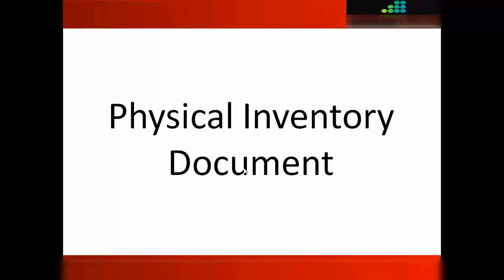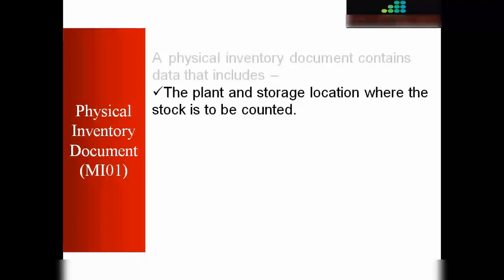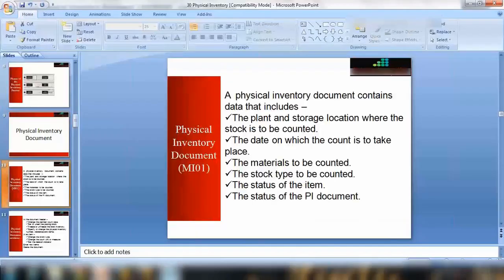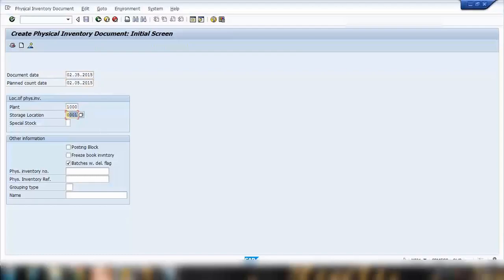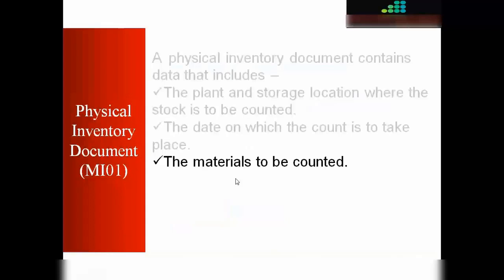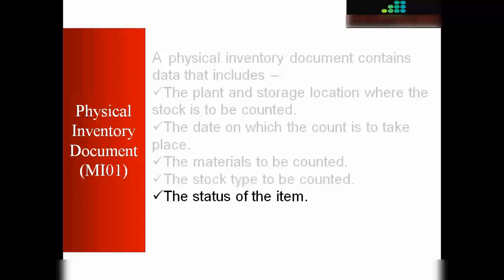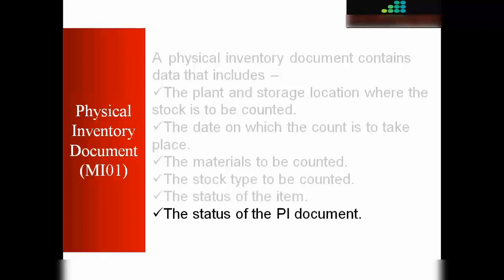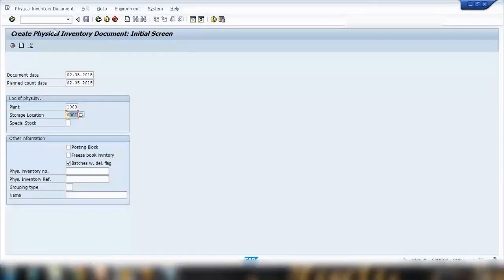From a theory perspective, a physical inventory document contains data that includes: the plant and storage location where the stock is to be counted — as you saw when we created the document in MI01, we entered the plant and storage location — the date on which the count is to take place, the materials to be counted, the stock type such as consignment stock, the status of the item, and the status of the physical inventory document header. So there are two statuses: item status and header status.